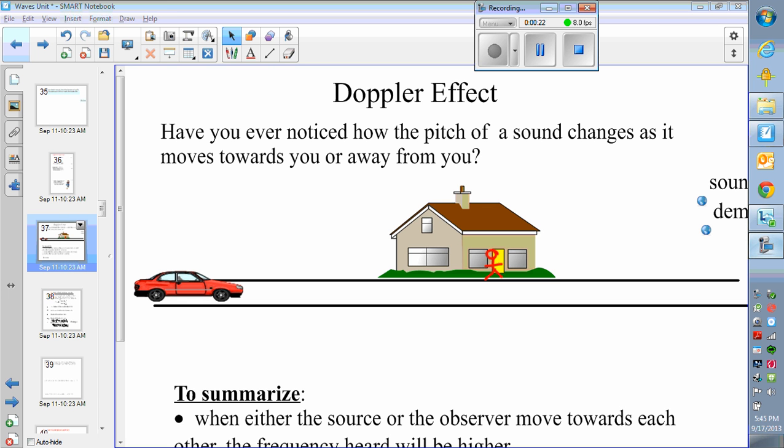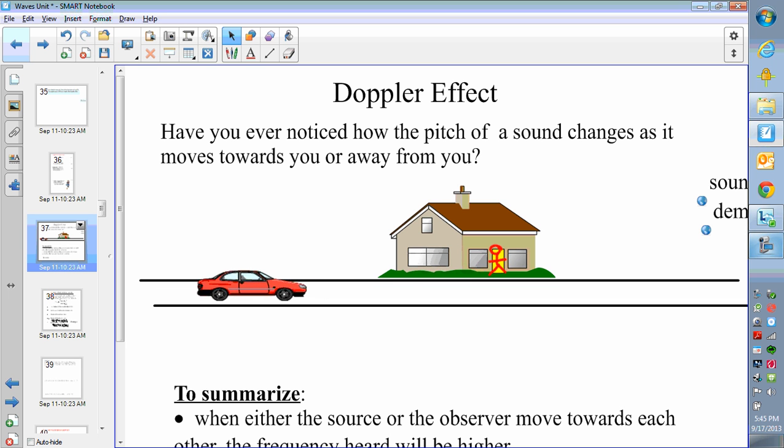So, the first question I have for you is, if you've ever noticed how the pitch of a sound changes as it moves towards or away from you, meaning if a car was driving by, so you're here in your house, and a car goes by with the horn blaring, does the sound of that car change from when it is going towards you versus when it's going away? And most of you would have the experience of hearing sounds where a horn goes by you or a train goes by.